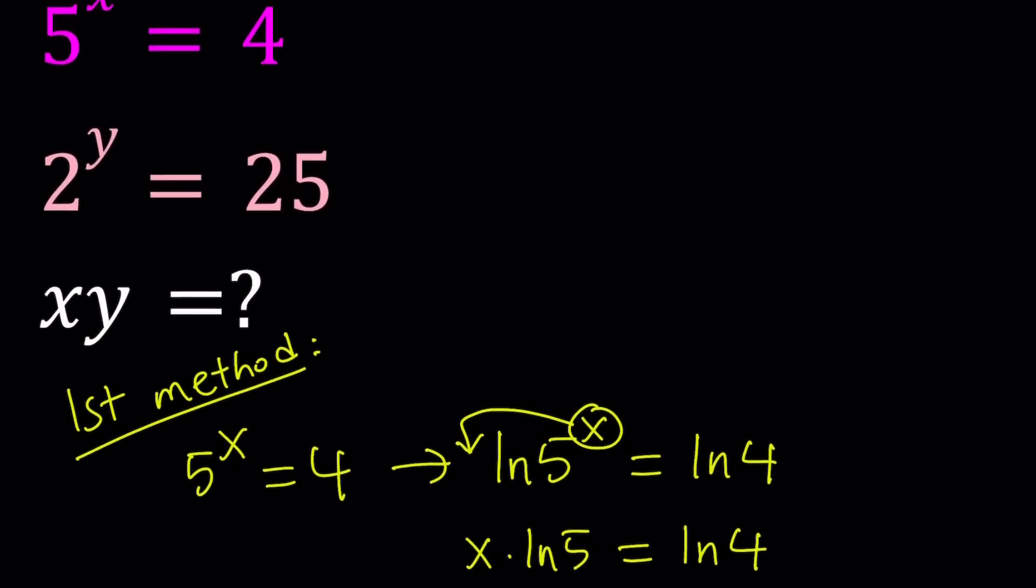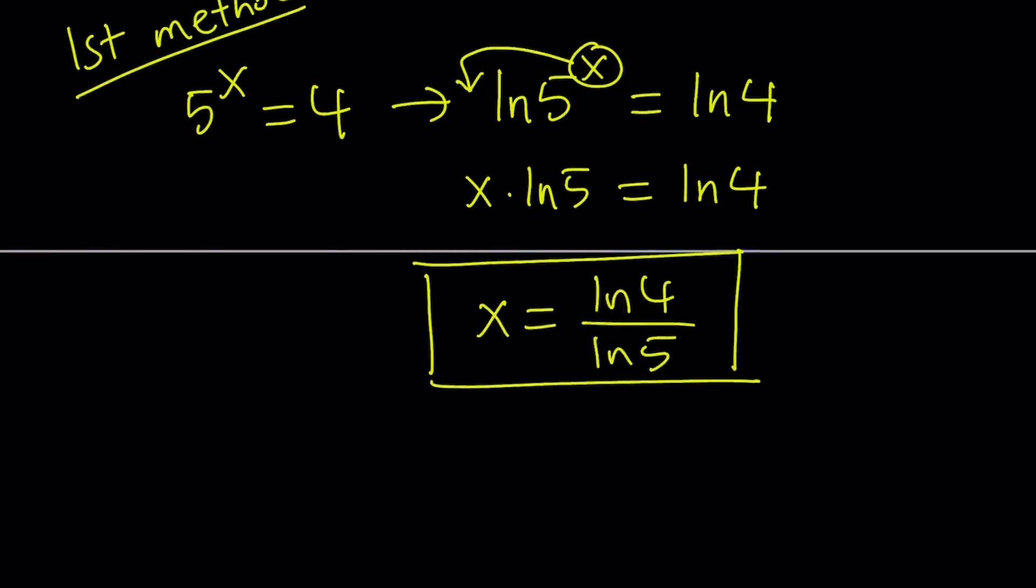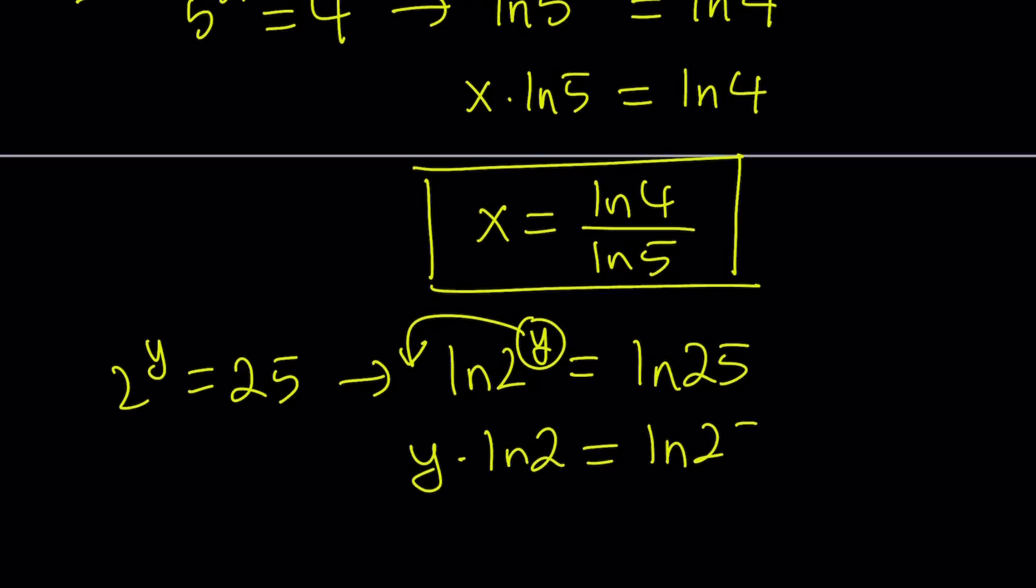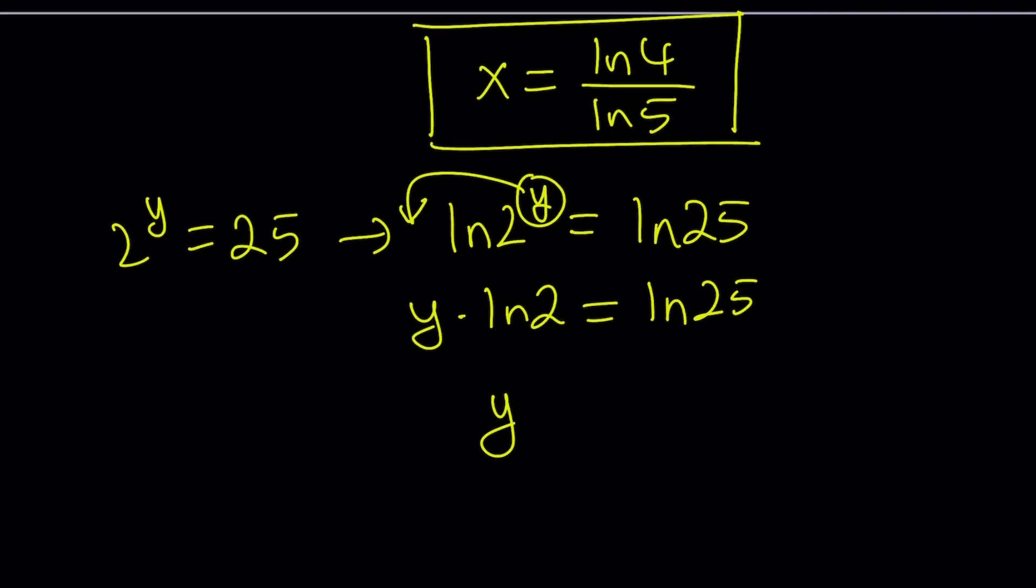So let's do the same thing for y. And from here, we got 2 to the y equals 25. And then natural log both sides. And then bring the y to the front. y times ln 2 equals ln 25. And then divide both sides by ln 2.